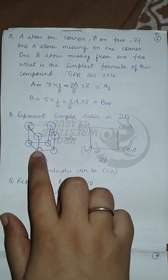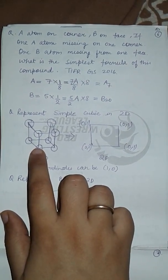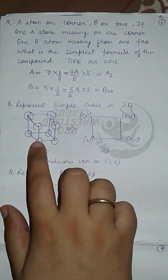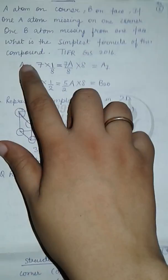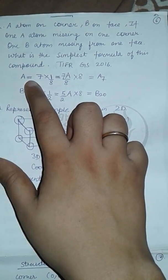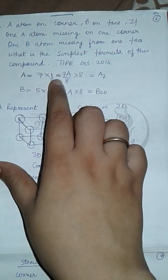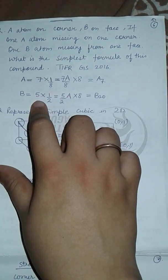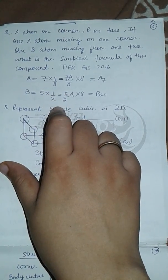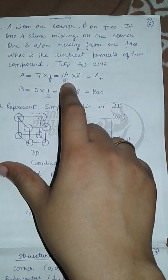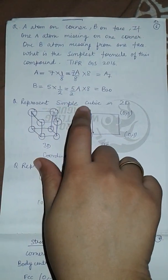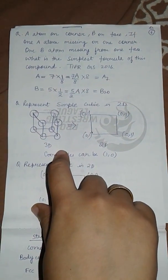If atom A is on corners and atom B is on faces, but one A atom and one B atom are missing: for A, seven remaining corners times one-eighth gives seven-eighths A. For B, five remaining faces times one-half gives five-halves B. Multiplying by eight to get whole numbers gives A7 and B20, so the formula is A7B20.